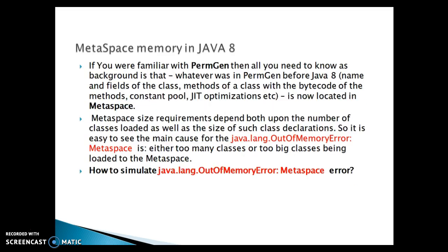If you were familiar with PermGen, all you need to know is that whatever was in PermGen before Java 8 — names and fields of the class, methods of the class with the bytecode, constant pool (including the String constant pool), and JIT optimizations — is now located in the MetaSpace. These things have been removed from PermGen and shifted to MetaSpace memory.